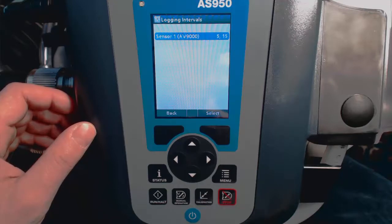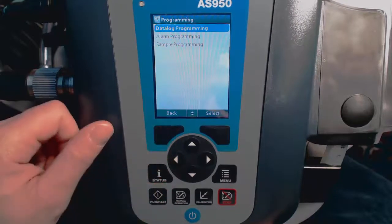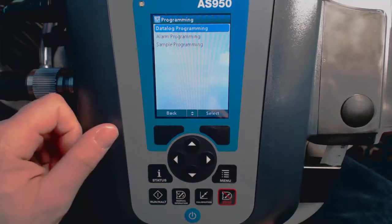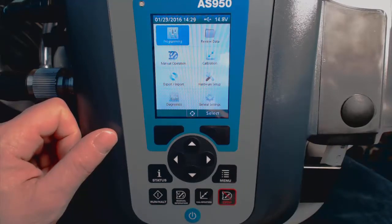Now we'll select Back a couple times, and this will offer us the opportunity to change other parameters on other sensors if we have them connected up. Then we'll get this warning message acknowledging the loss of data if we continue, and that's OK.